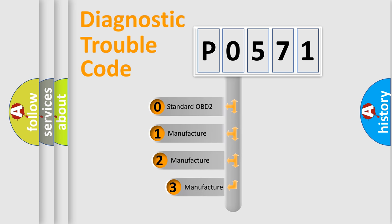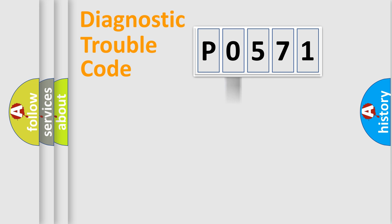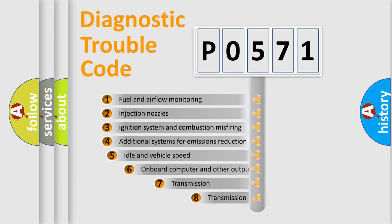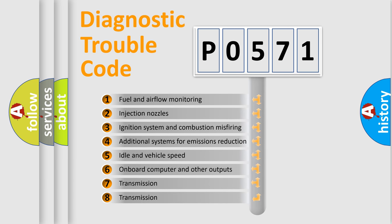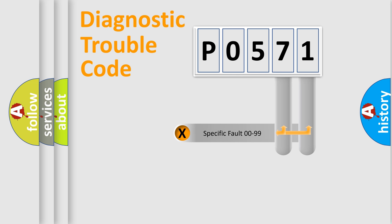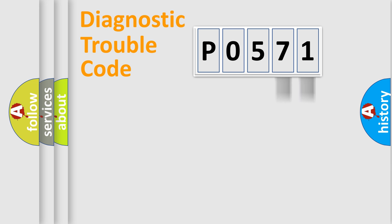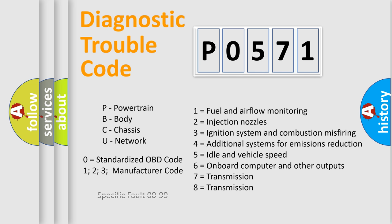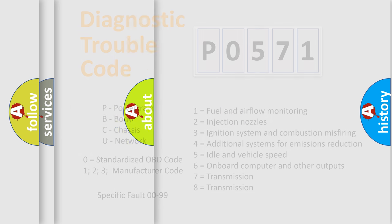If the second character is expressed as zero, it is a standardized error. In the case of numbers 1, 2, or 3, it is a more manufacturer-specific expression of a car-specific error. The third character specifies a subset of errors. This distribution is valid only for the standardized DTC code. Only the last two characters define the specific fault of the group, and this division is valid only when the second character is expressed by the number zero.